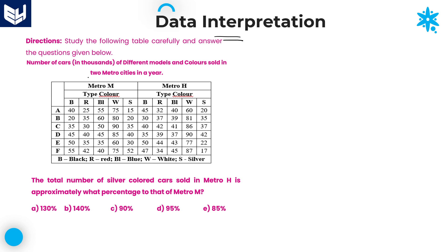First, read the information which is given. The information is about the number of cars of different models and colors sold in two metro cities in a particular year, and each and every value is given in terms of thousands.